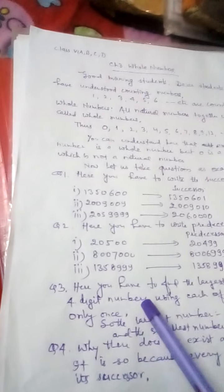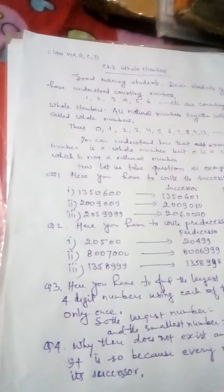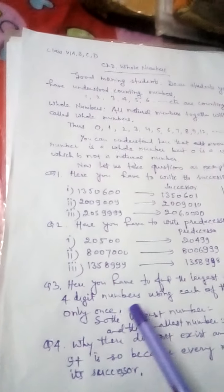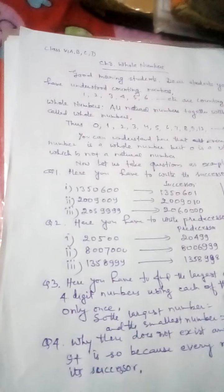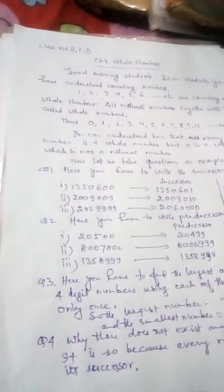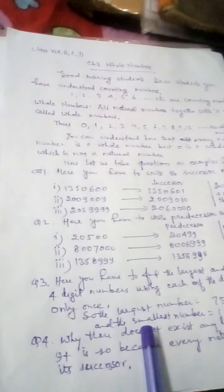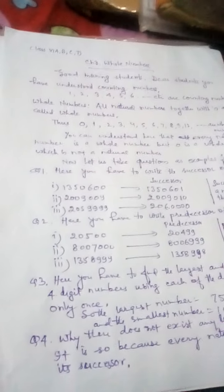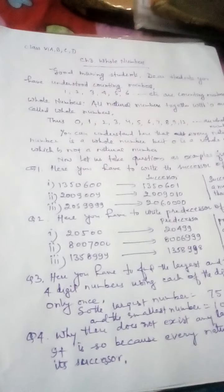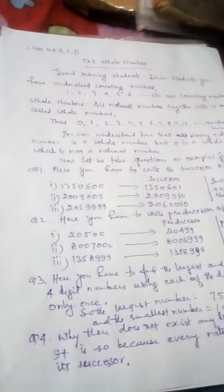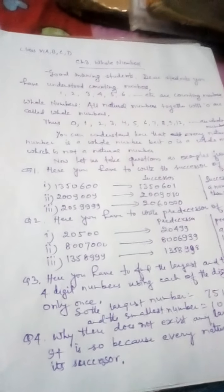Now move for question number 3. Here you are asked to find the largest and the smallest 4-digit numbers using each of the digits 7, 1, 0, 5 only once. So the largest number will be 7510, whereas the smallest number will be 1057.